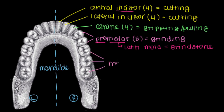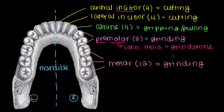We have three molar teeth on each side, which means a grand total of 12 molars. Just like the premolars, the molars are here for grinding as well, to break down our food as we chew — same Latin root. Interestingly, this textbook picture of what your lower jaw should look like is actually what it looks like in only 28% of people in the population.